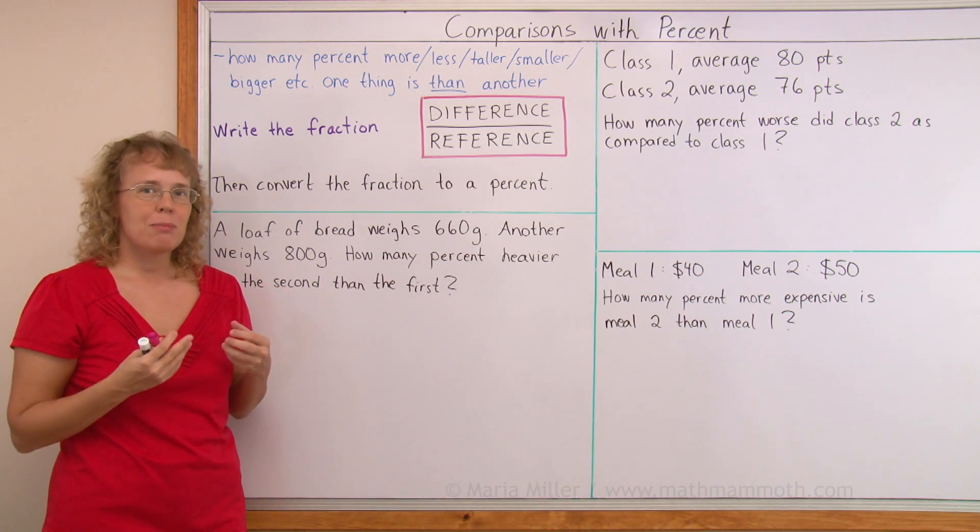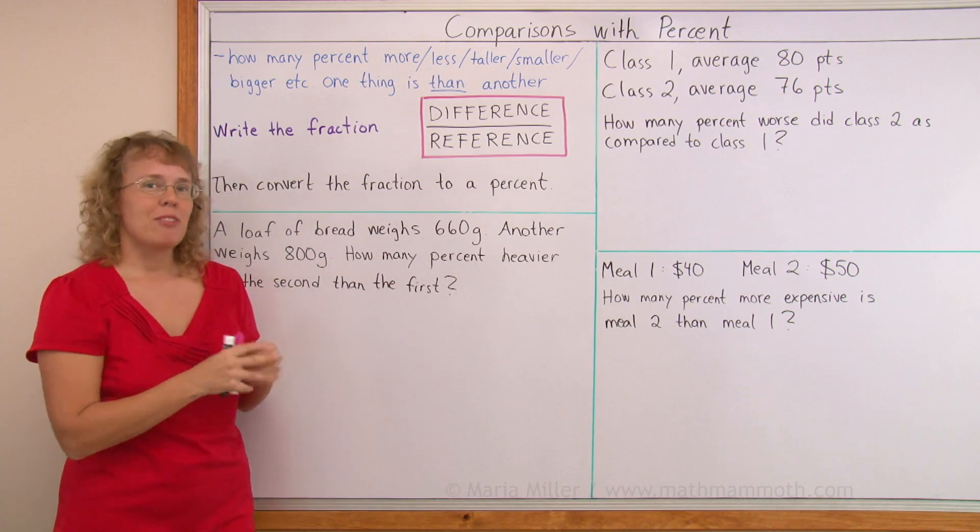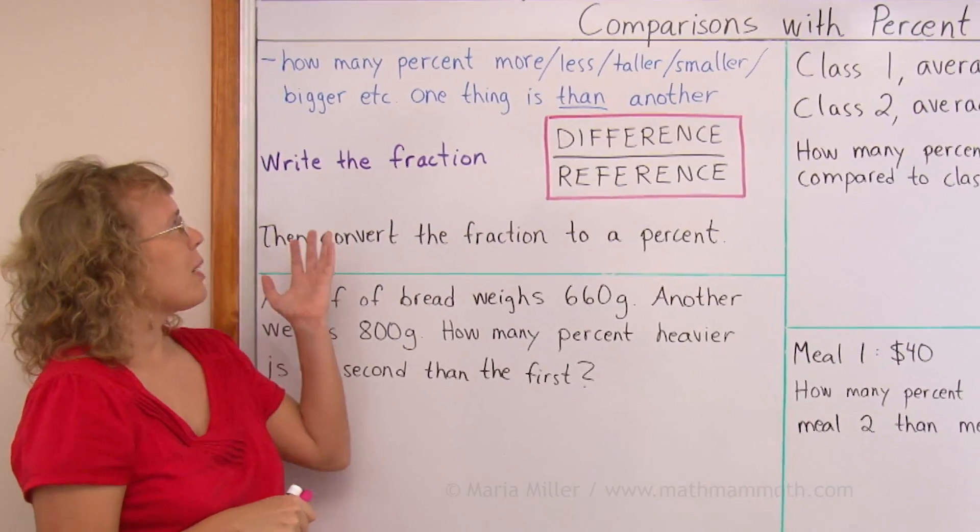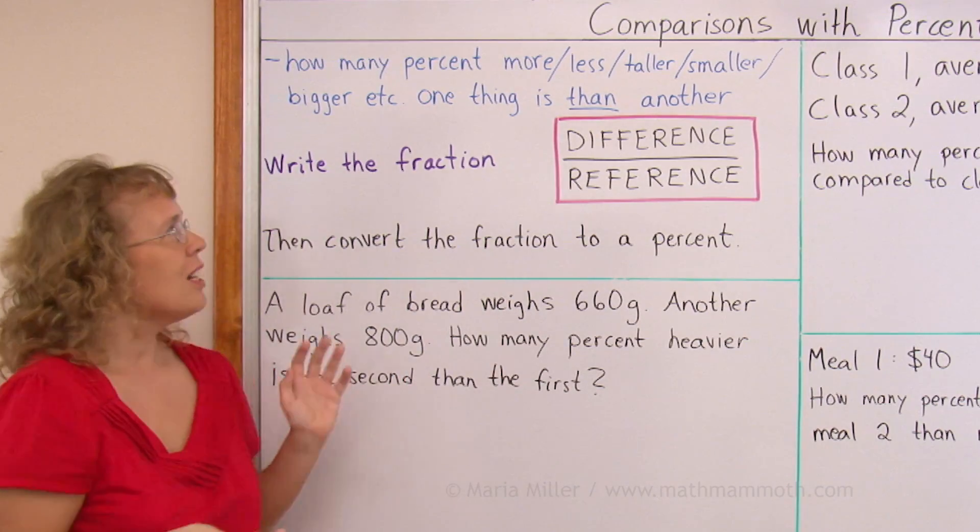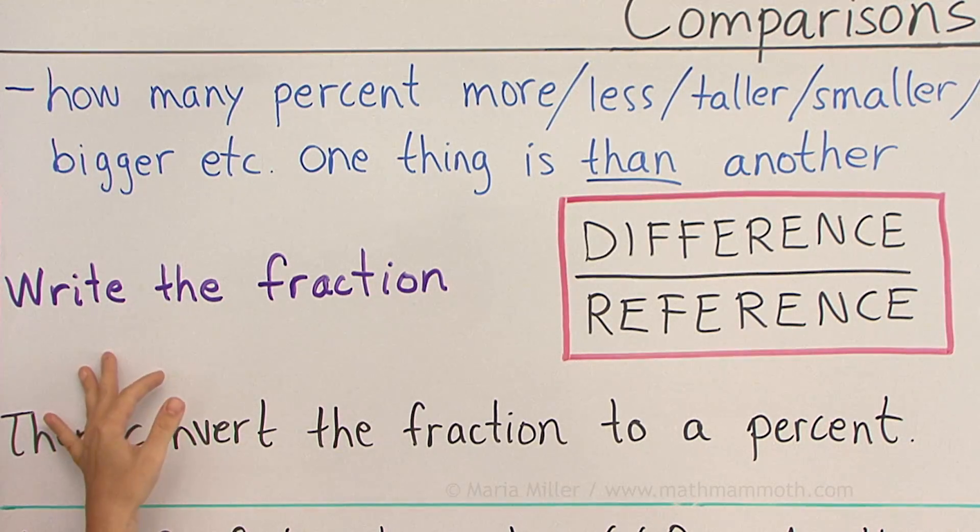Now we're doing the same thing, but instead of the same thing at an earlier and a later time, we have two different things we're comparing. So for example, it might ask how many percent more or how many percent taller or smaller or bigger. One thing is than another.